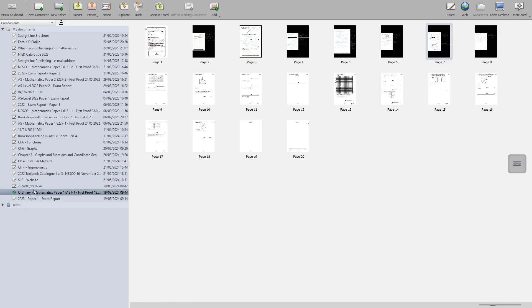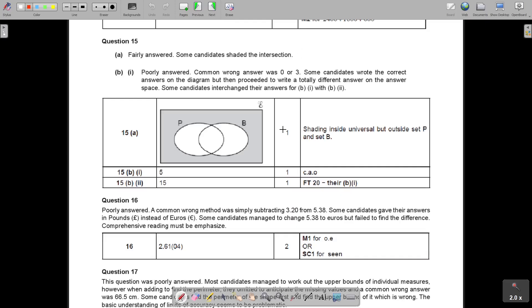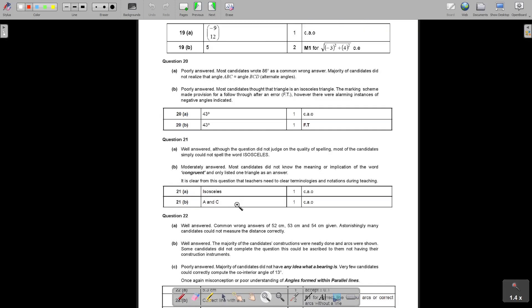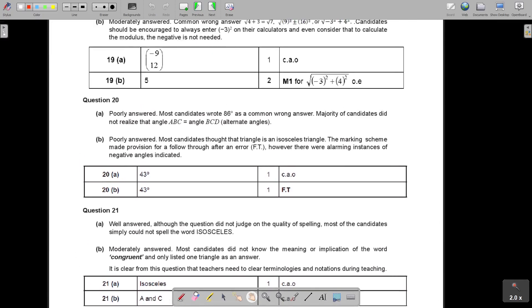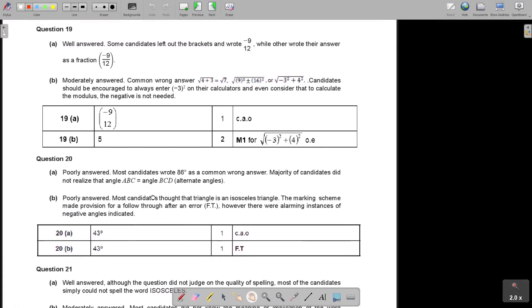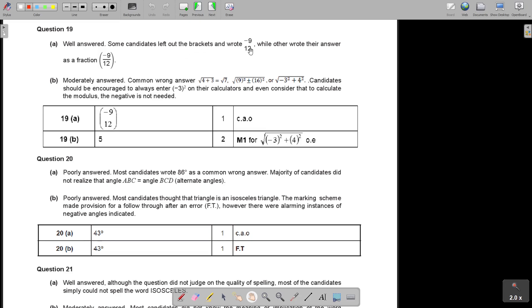Let's just go to the examination report. Question number 19. It's usually because students don't come to this part. This one was well answered. Some can leave out the brackets. Don't forget the brackets, it's a vector. While others wrote their answer as a fraction. Don't make that. And then number B is moderately answered. Candidates should be encouraged to always enter negative three on their calculator. To calculate the modulus, the negative is not needed. Don't come to a negative there. A negative times a negative is a positive, and that's why we get five.